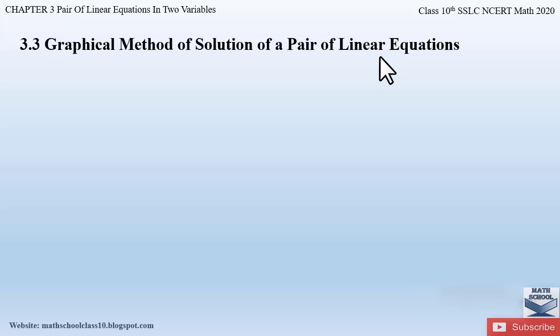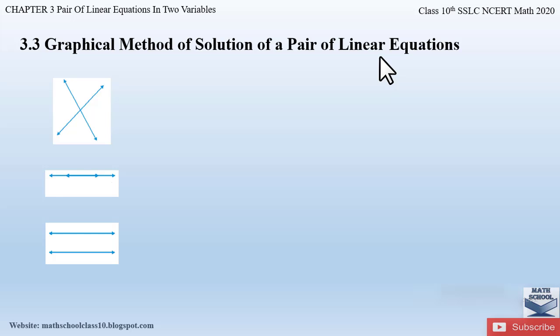In the previous section you have already seen how we can graphically represent a pair of linear equations on a graph. Only one of the following three possibilities can happen: the two lines can either intersect, coincide, or be parallel. In this section we will find the solution for each of these cases. Let us consider Examples 1, 2, and 3 from my previous videos.